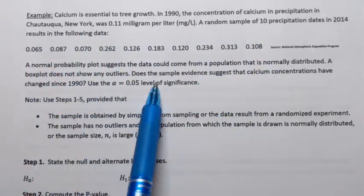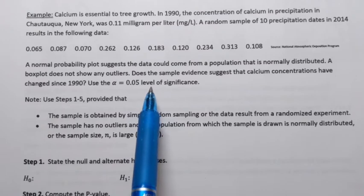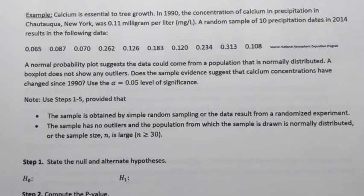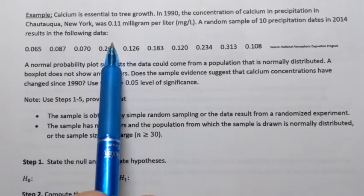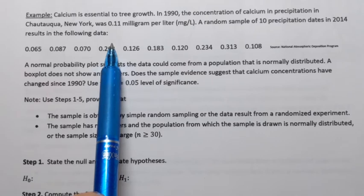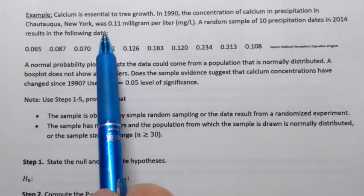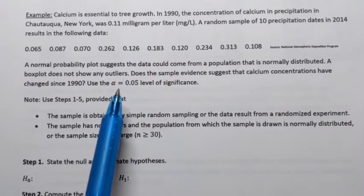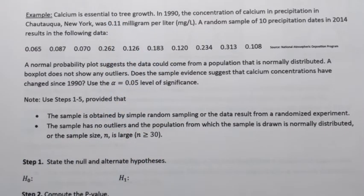We're going to use the sample to test whether the calcium concentration have changed since 1990. So we're conducting hypothesis testing. What is the parameter here? We're dealing with population mean. The average concentration of calcium in precipitation in that city in 1990 is 0.11 milligram per liter.